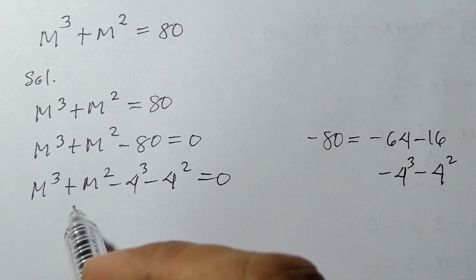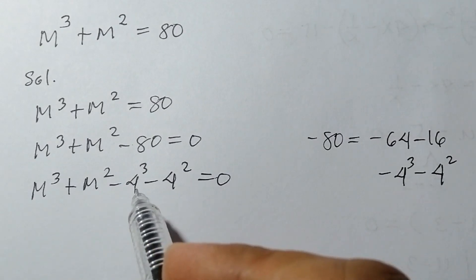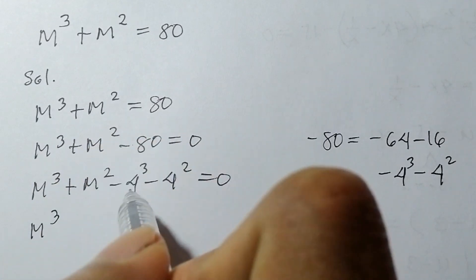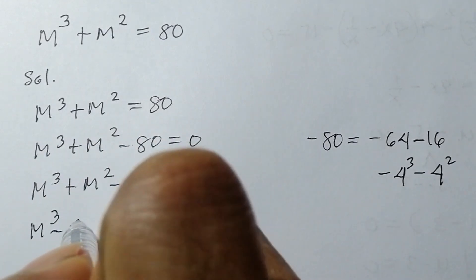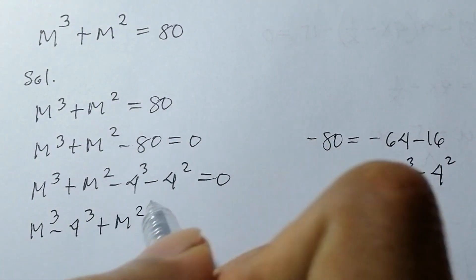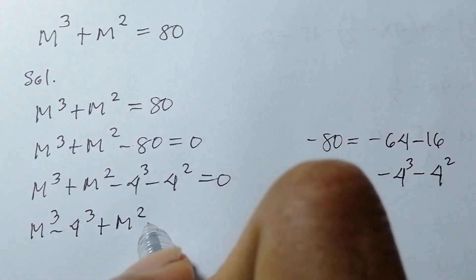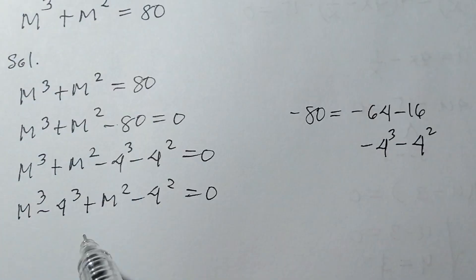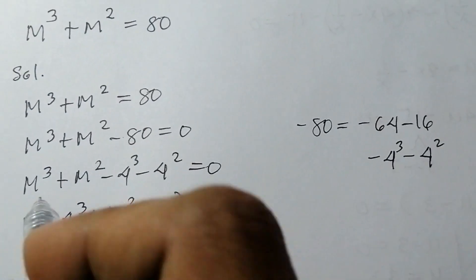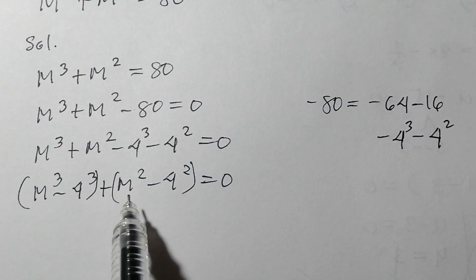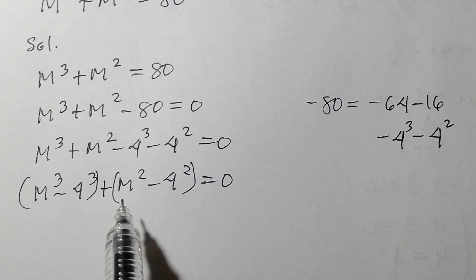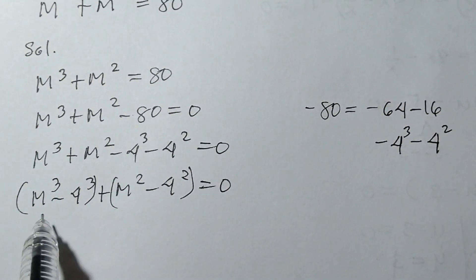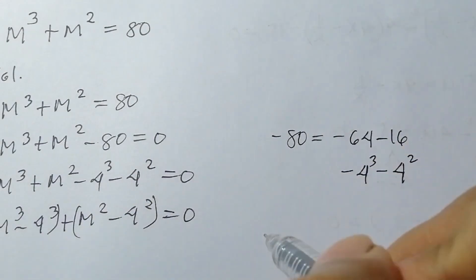So we have m³ plus m² minus 4³ minus 4² equals zero. We are going to combine the terms that have the same power roots: m³ minus 4³, plus m² minus 4², equals zero. In this form, we are going to use the difference of two cubes.